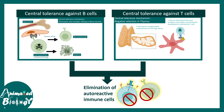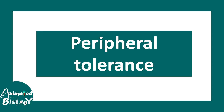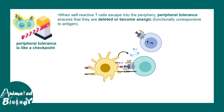Now we move to peripheral tolerance, which happens outside the primary lymphoid organ. When self-reactive T-cells somehow escape the central tolerance mechanism, there is another fail-safe mechanism — peripheral tolerance — which operates and deletes these autoreactive cells. It functions as an immune checkpoint, with many players and molecules involved in this process.